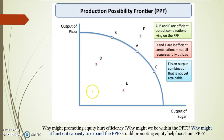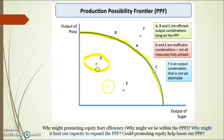When we're talking about efficiency, we're generally talking about working on our PPF. When we're being technically efficient, we're maximising our use of output per unit of input. If we're producing at points inside the PPF, then we are not maximising efficiency.